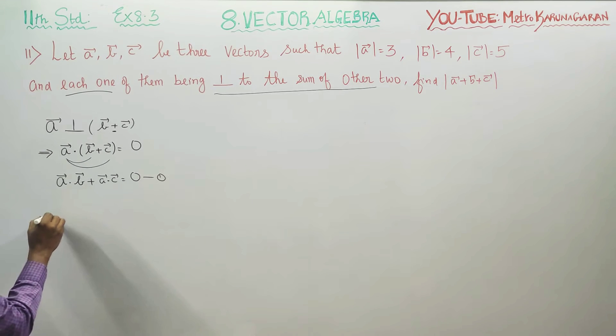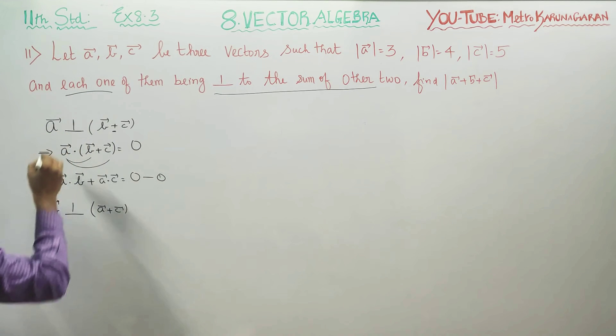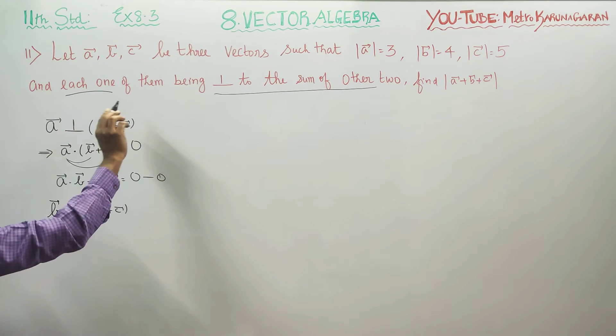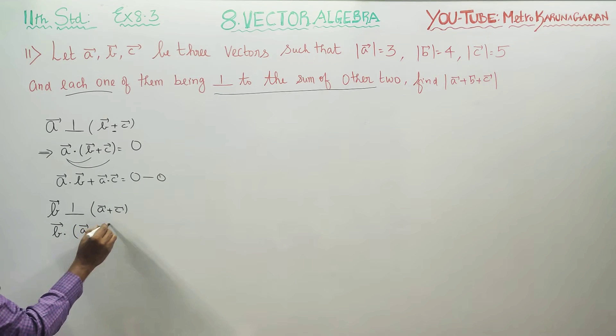Similarly, B vector, second condition, B vector is perpendicular to the other two vectors. So other two vectors, A plus C. Each one, A, B, C, each one is perpendicular to the sum of the other two. Perpendicular means dot product is 0. B dot (A plus C) is equal to 0. Dot is distributive, you can get B vector dot A vector plus B vector dot C vector is equal to 0. This is my result number 2.